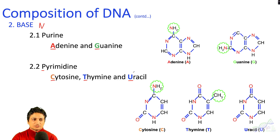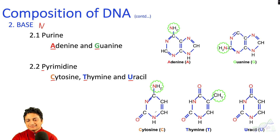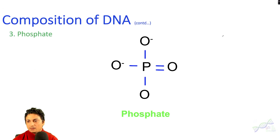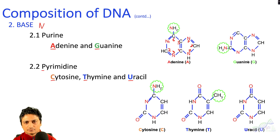Purine is a nine-membered double ring structure, while pyrimidine is a single six-membered ring structure. For purine, the positions are numbered one through nine. Adenine has an amine group (NH2) at the sixth carbon position, while guanine has an amine group at the second carbon position.